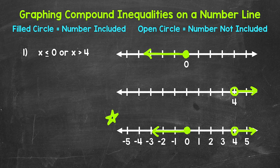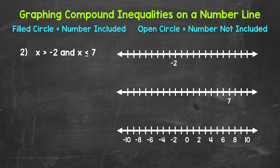Let's move on to number 2, where we will have an AND compound inequality. We have x is greater than negative 2, and x is less than or equal to 7. So we have two inequalities combined by AND — x has to be greater than negative 2 AND less than or equal to 7. A solution of a compound inequality involving AND must make both inequalities true; it must satisfy both.